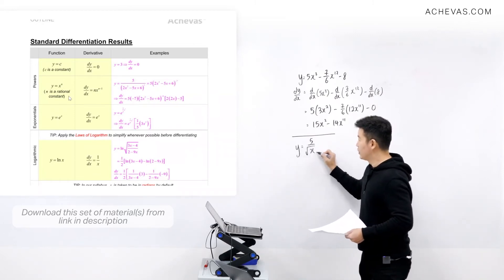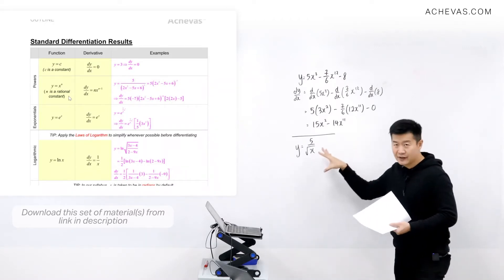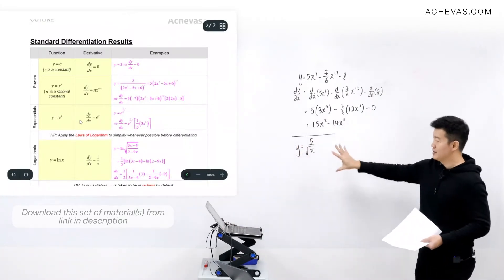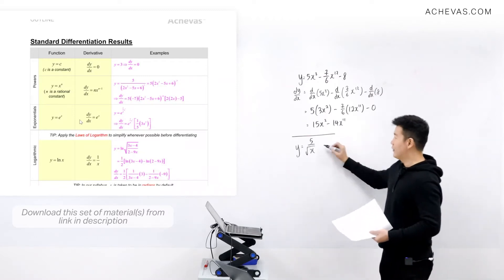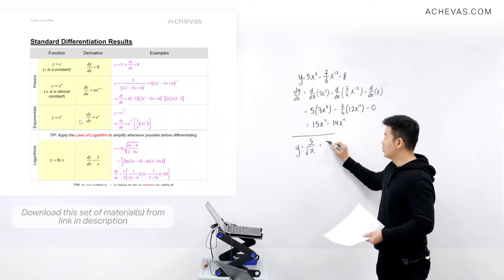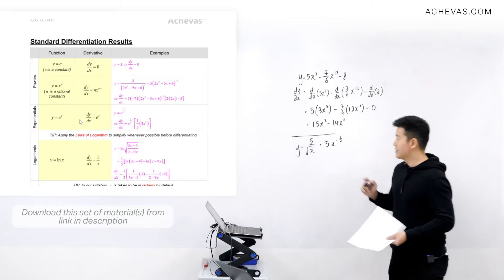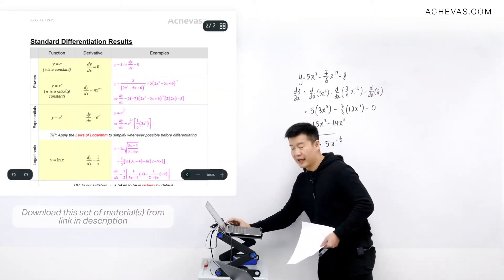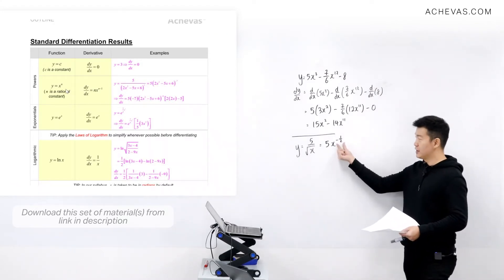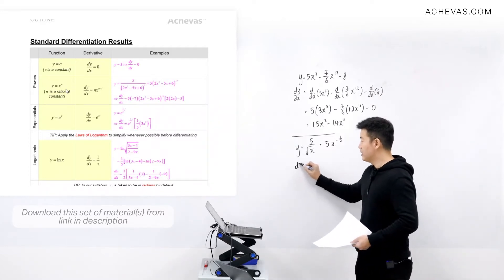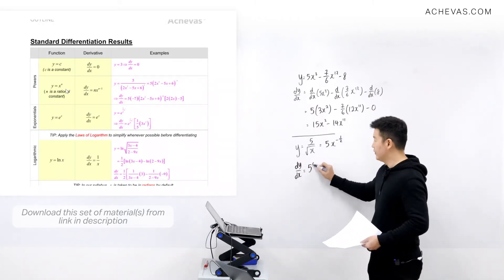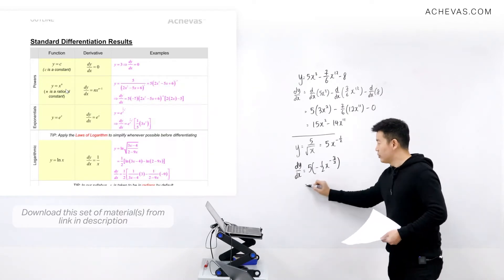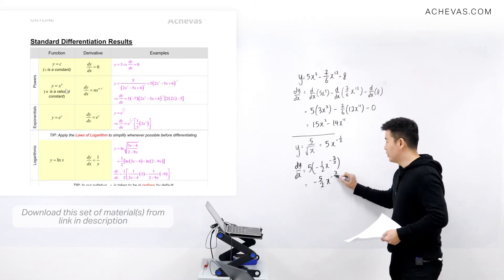How about if we are given y = 5/√x? We need to manipulate this using what we know about exponentials. We can rewrite it as 5x^(−1/2), because x^(−1/2) is the same as 1/√x. Now this follows the form x^n, where n = −1/2, which is a rational constant. So dy/dx = 5 times (−1/2) times x^(−1/2 − 1) = 5 times (−1/2) times x^(−3/2), giving a final answer of −(5/2)x^(−3/2).